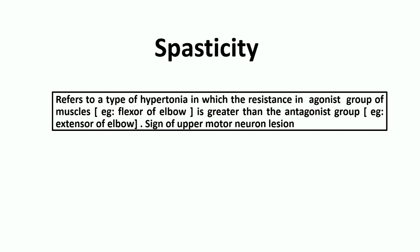The other type is called rigidity, where the resistance in the agonist and the antagonist muscles remains the same. While spasticity is a sign of upper motor neuron lesion, rigidity is commonly encountered in extrapyramidal lesions like Parkinson's disease.